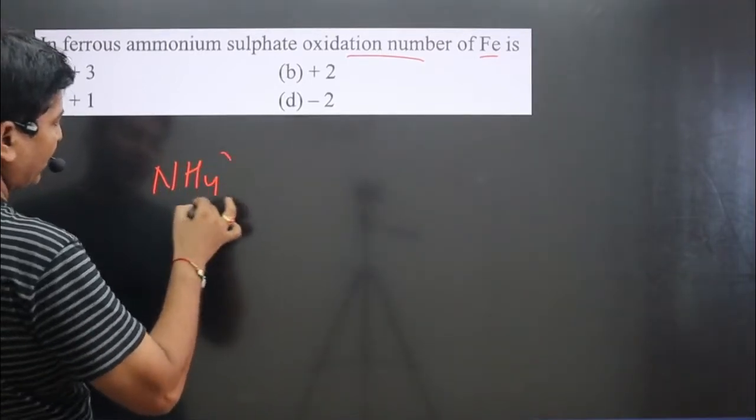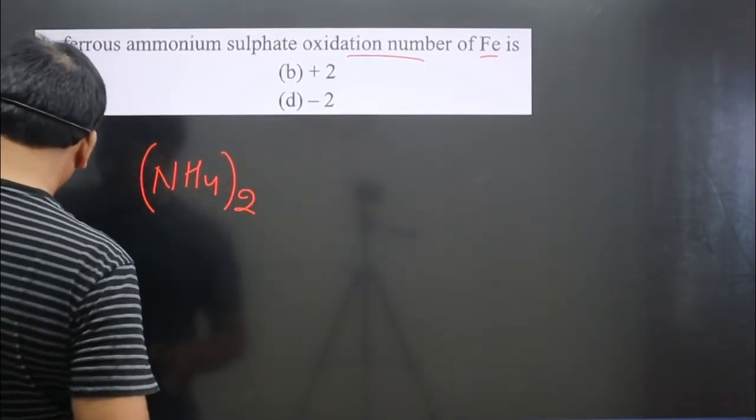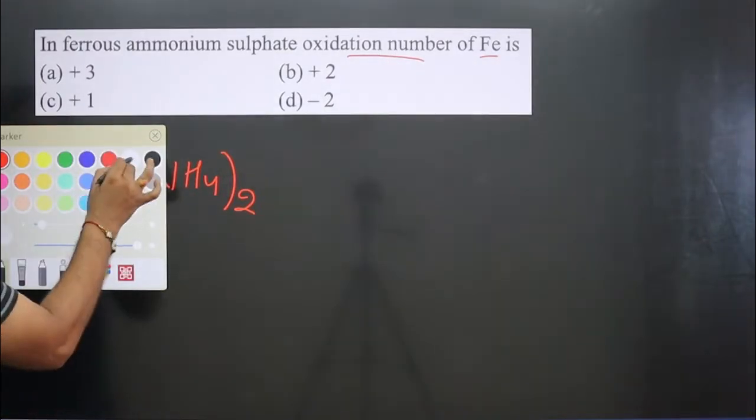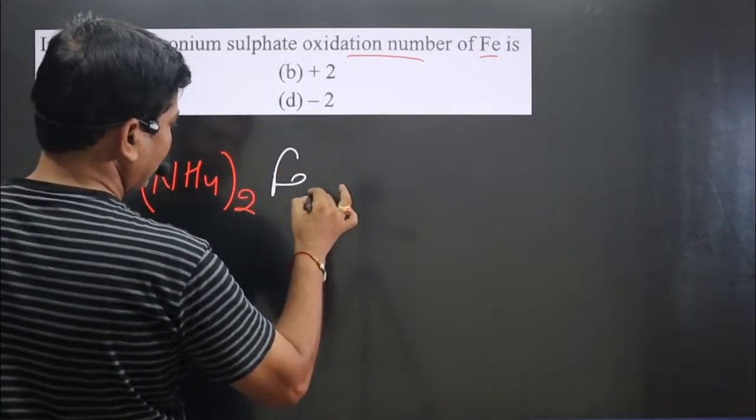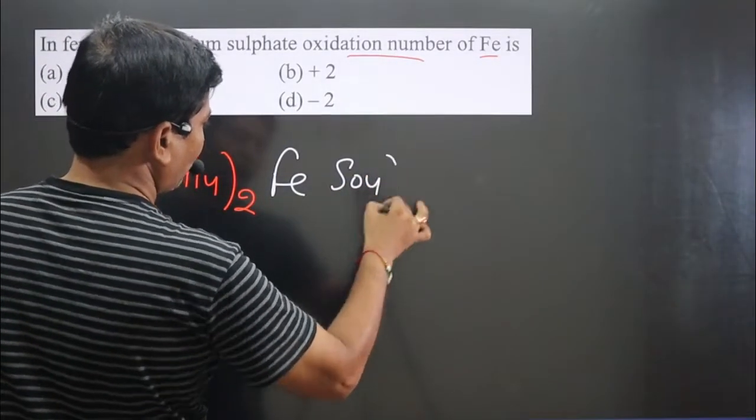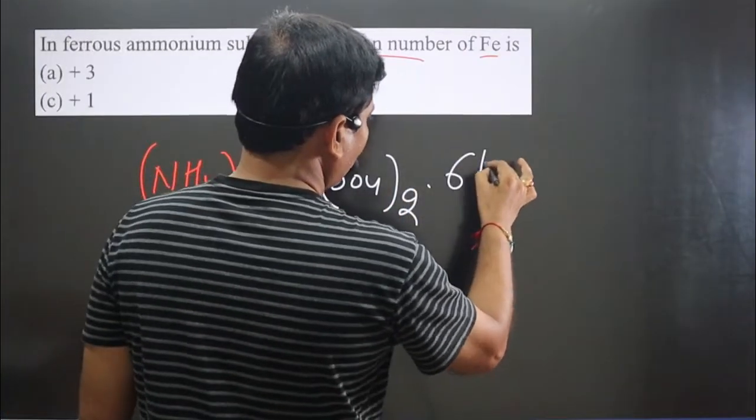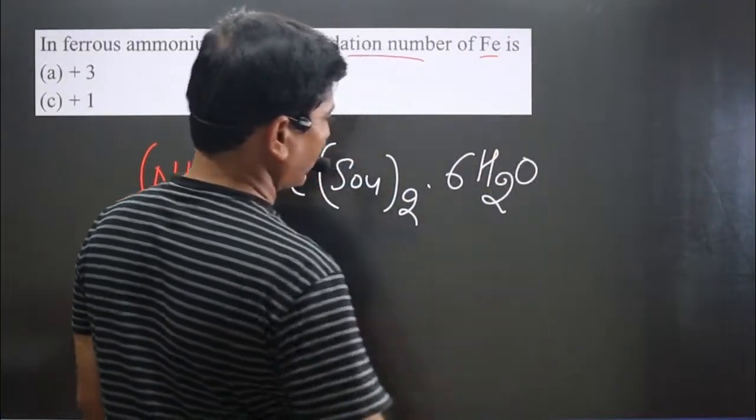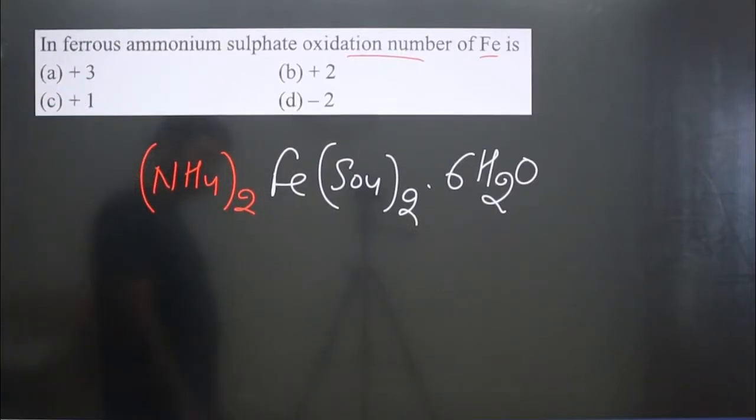Fe(SO4)2·6H2O. There is NH4, there is iron, SO4 whole twice is there, and six water molecules are there in the crystalline form. This is the chemical formula. This is also known as Mohr's salt.